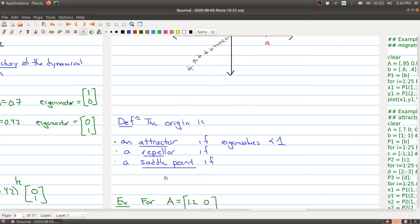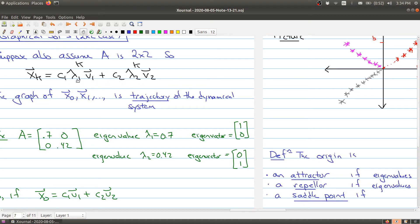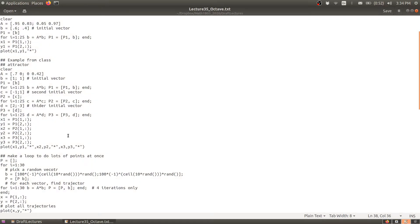Now, on the other hand, it's called a repeller if the eigenvalues are all greater than 1. And again, that kind of makes sense because if we look at this expression right here, if both of these numbers are bigger than 1, then this vector is going to shoot off to infinity.